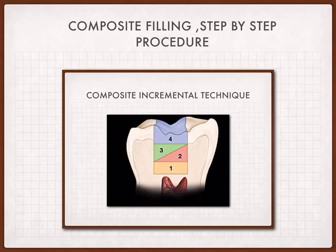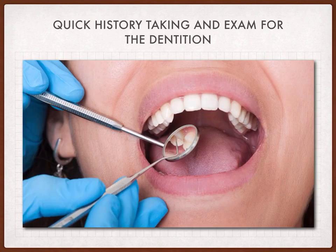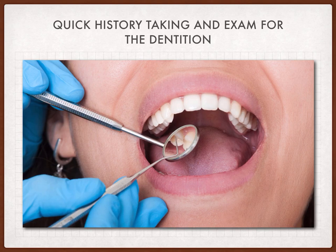In this presentation I will talk about the composite filling step-by-step procedure. The first step is to do a quick history taking procedure and a quick exam of the dentition. In the history taking we should confirm there is no spontaneous pain or continuous pain after removal of the stimulus. These two things are very important to exclude the need for endodontic treatment.